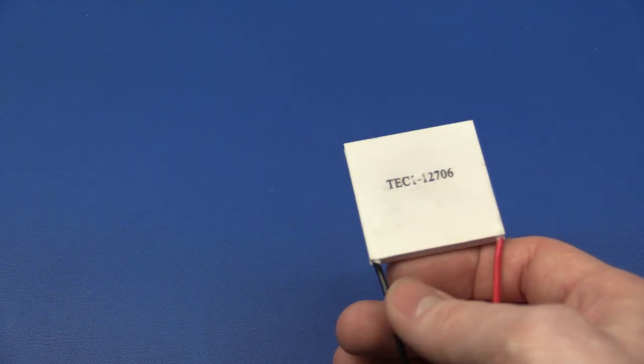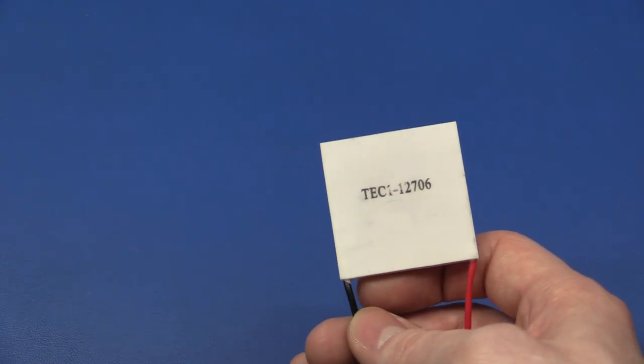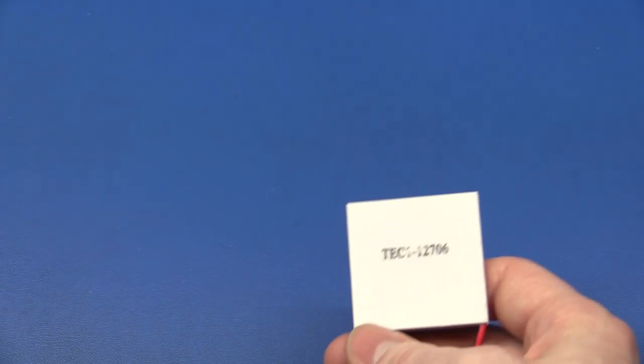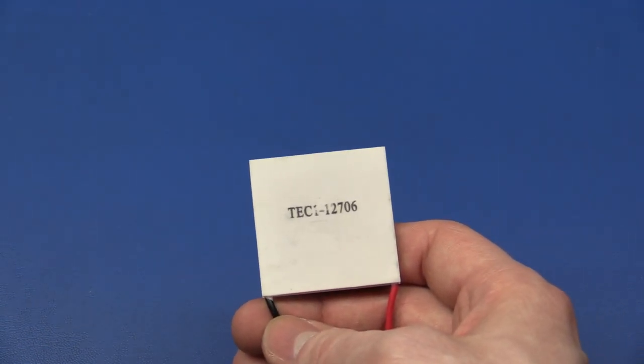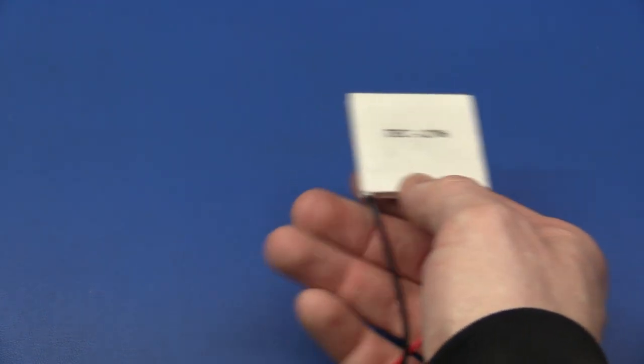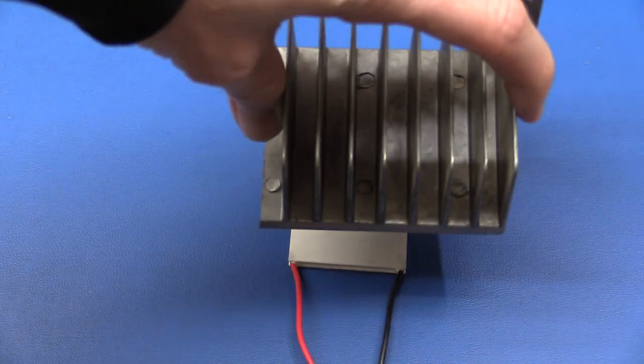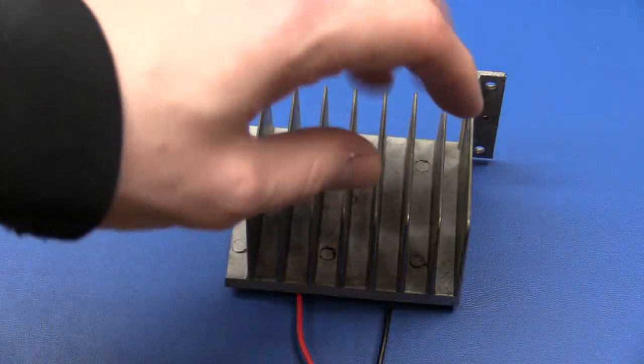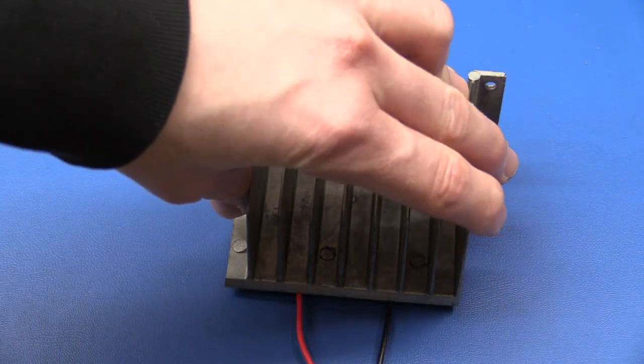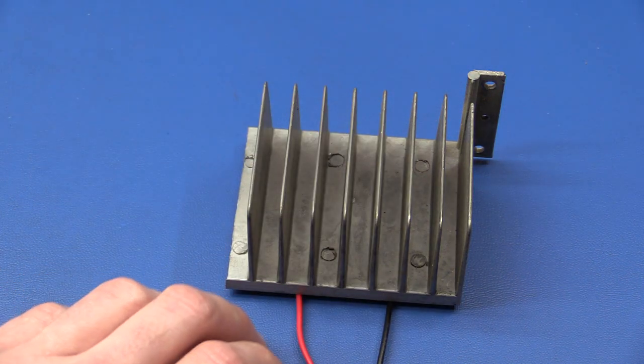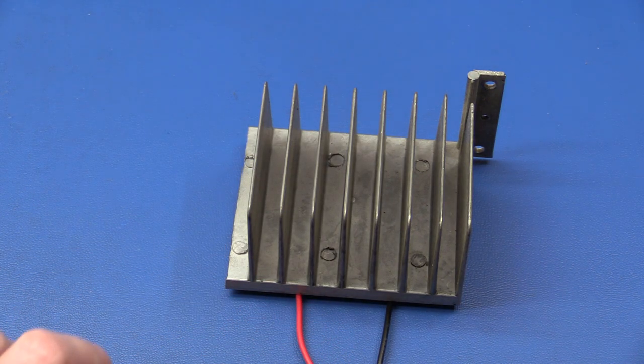But another application that I was thinking about is if you want to cool a device down to below room temperature. You can't do that with a regular heatsink of course. But if you put this element in between your device and your heatsink, and then add a fan on top here to cool this down to room temperature, the Peltier element will cool your device down a lot further. At least that's the theory.